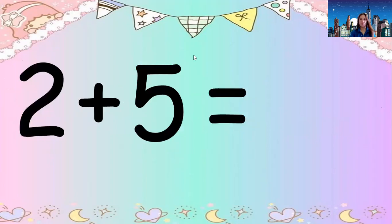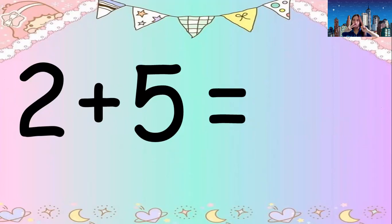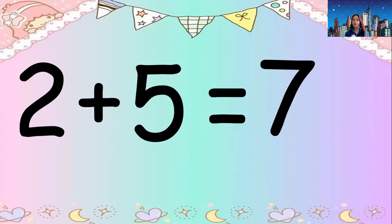Ready your fingers. What number is this? Two. And how about this one? Five. Let's add two fingers plus five fingers — how many? Everybody count: one, two, three, four, five, six, seven. The answer is seven. Read: two plus five equals seven. Great job.